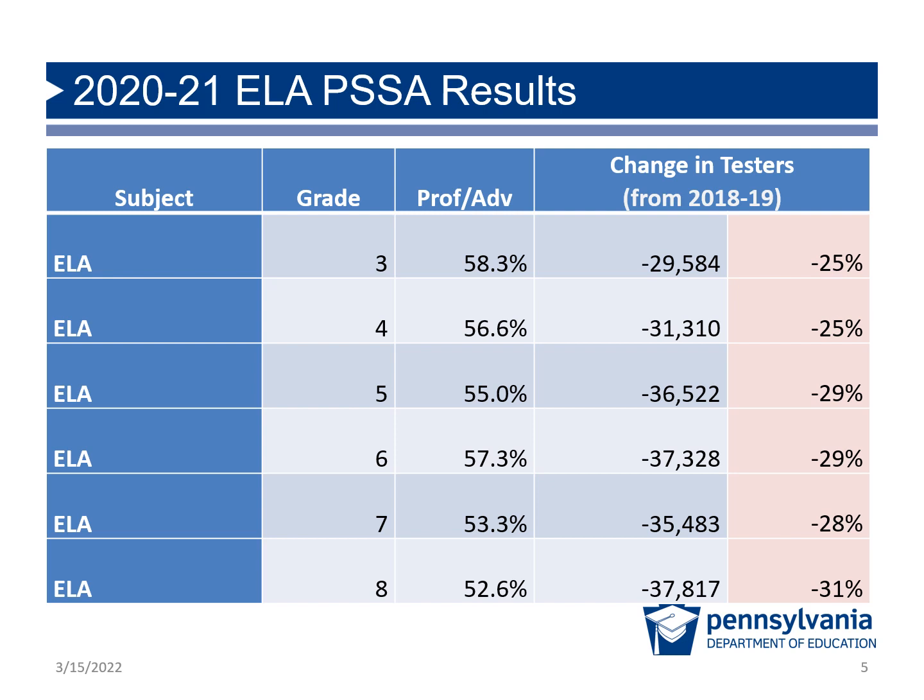Here you see the 2021 English Language Arts PSSA results. You may notice a drop in proficiency from about 3.5% to 7% across the grade levels. More importantly, you should notice a drop in participation from about 25% to 31%. This means anywhere from a quarter to a third fewer students participated in the exams this year.